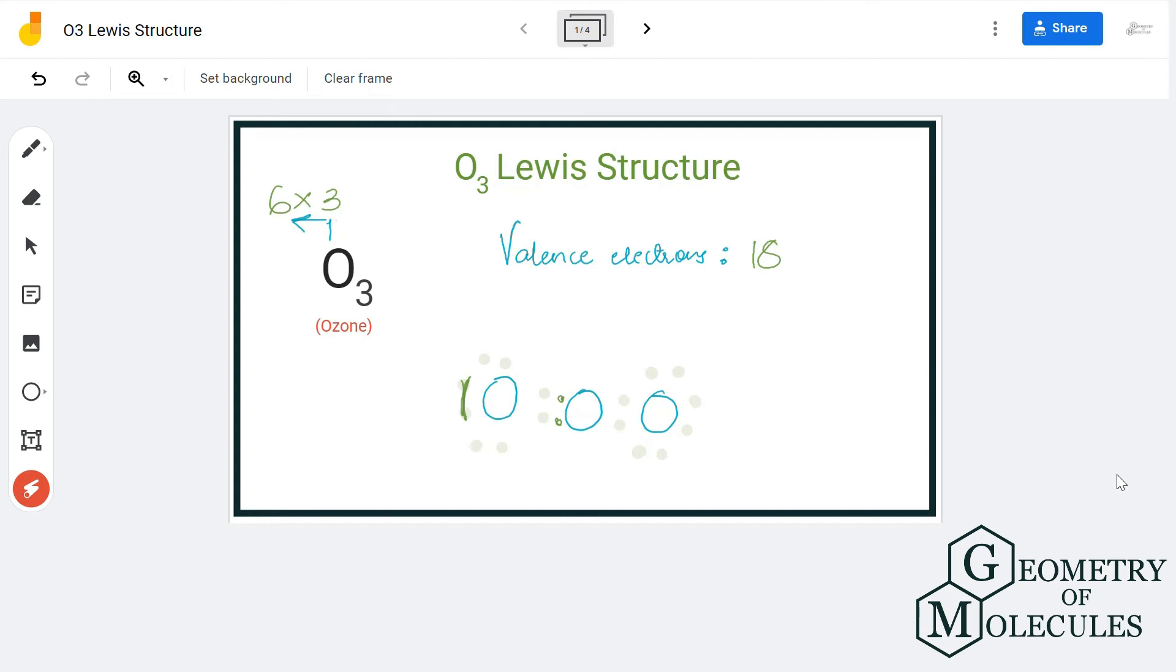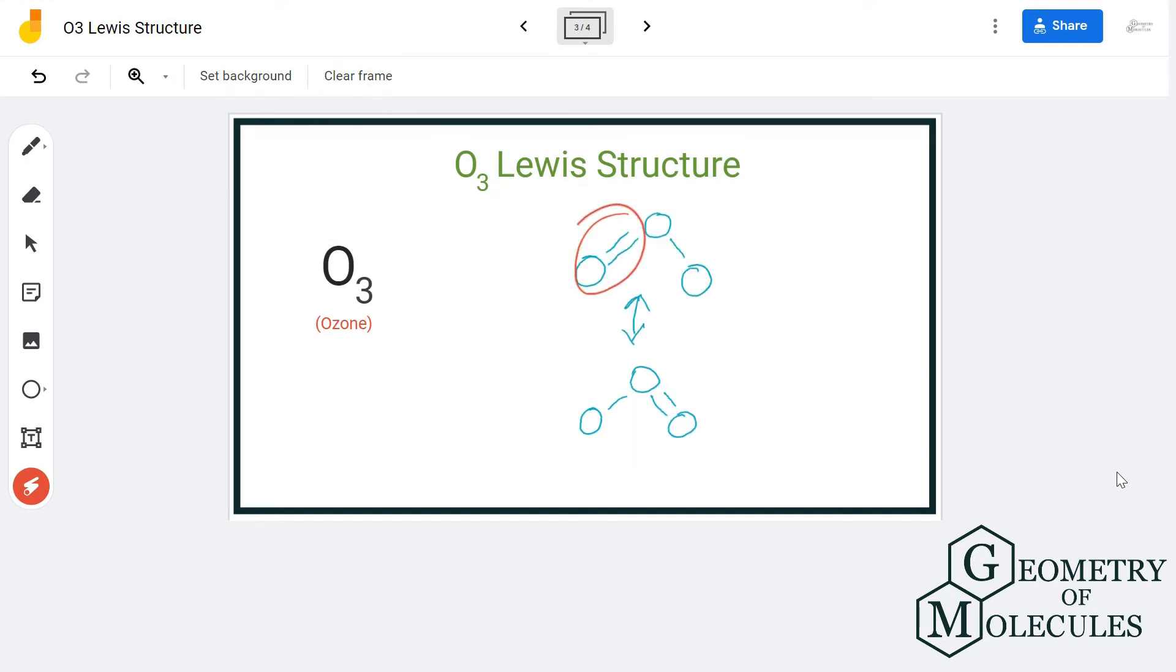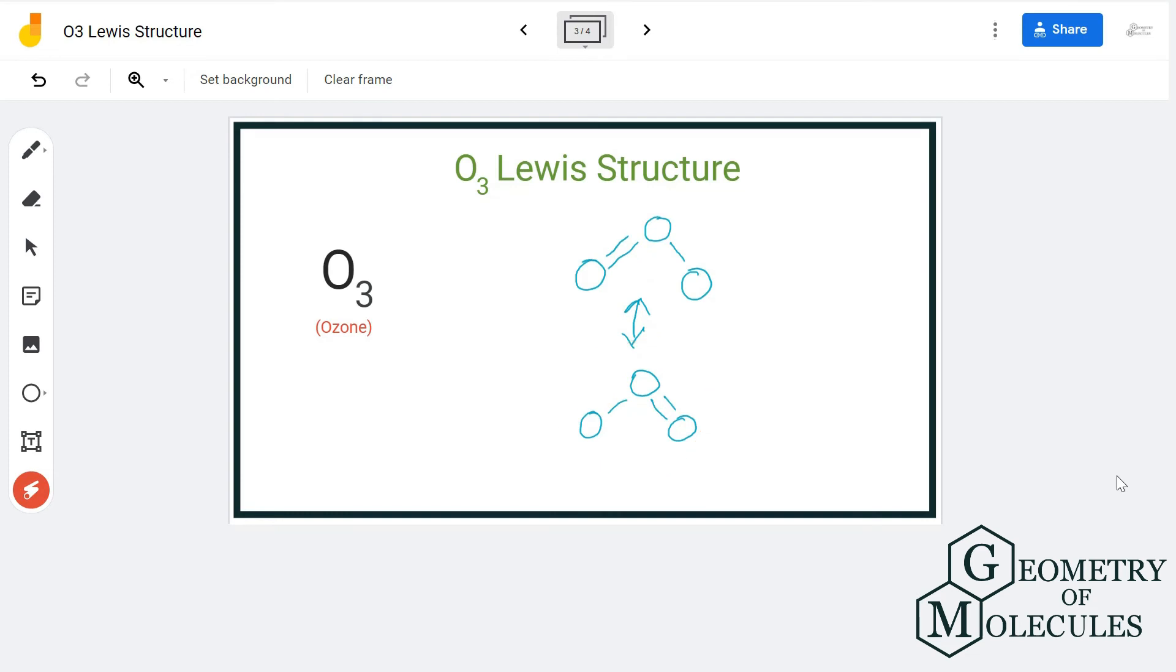This bond can be on this side as well, and a molecule that shows these kinds of structures is known as resonance structures. The structure of ozone is unique as the central atom has one double bond and one single bond with the neighboring oxygen atoms. These bonds keep interchanging their places, and hence this ozone molecule has resonant Lewis structure.